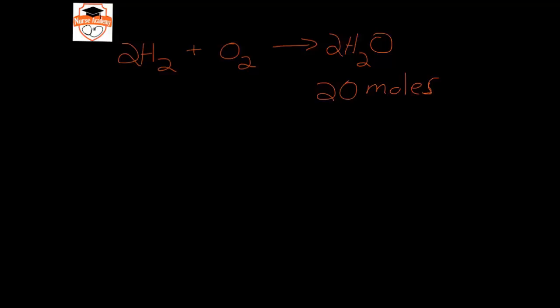So to get 20 moles of water you would have to start out with 20 moles of hydrogen and, I'm sorry, 10 moles of oxygen because two parts of hydrogen and one part oxygen make two parts of H2O.